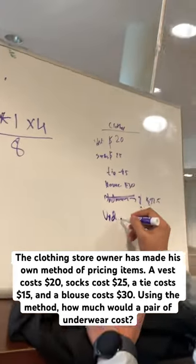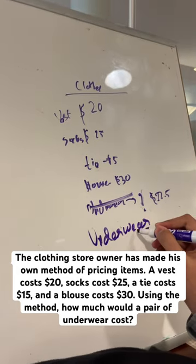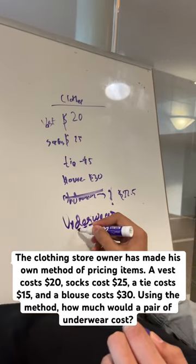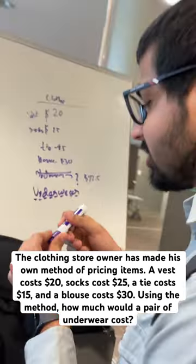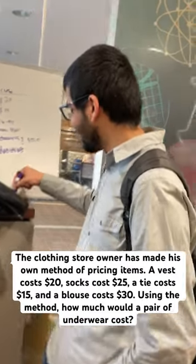All right, D-E-R-W-E-A-R. So that's one, two, three, four, five, six, seven, eight, nine, right? So that's nine times five, so that's 45 dollars. There we go. I got one more, I got one more.